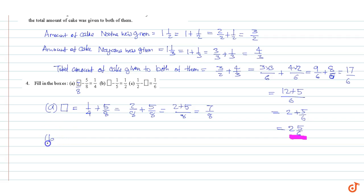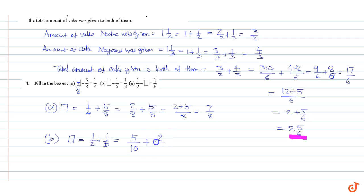Part B: unknown is equal to one by two plus one by five. Taking LCM as ten, we get five by ten plus two by ten, which is equal to five plus two by ten, equal to seven by ten. So here it is seven by ten.